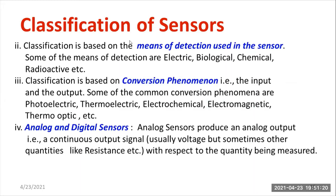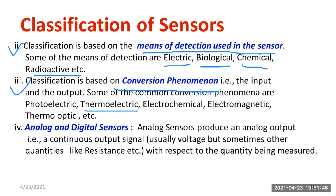The second classification is by the means of detection used in the sensor — for example, electric detection, biological detection, chemical detection, or radioactive detection. Based on that, you can divide sensors into electric, biological, chemical, and radioactive sensors. The third classification is based on the conversion phenomenon. For thermoelectric sensors, the input is temperature and the output is an electrical quantity. For electrochemical sensors, the input is chemical changes and the output is electrical. For electromagnetic sensors — such as antennas — electromagnetic waves are dealt with and the output is electrical. For thermo-optic sensors, the input is temperature and the output is in terms of light.